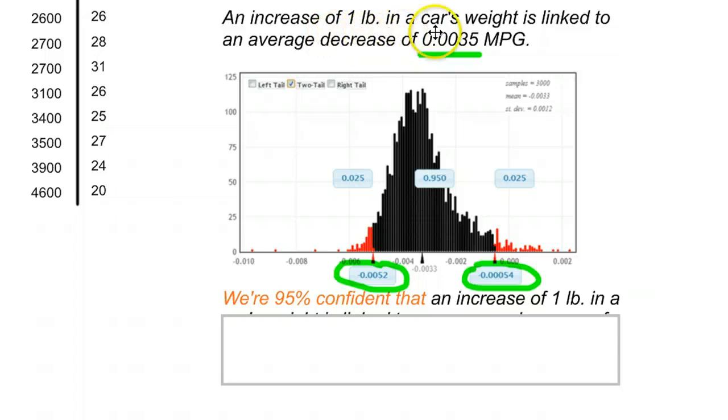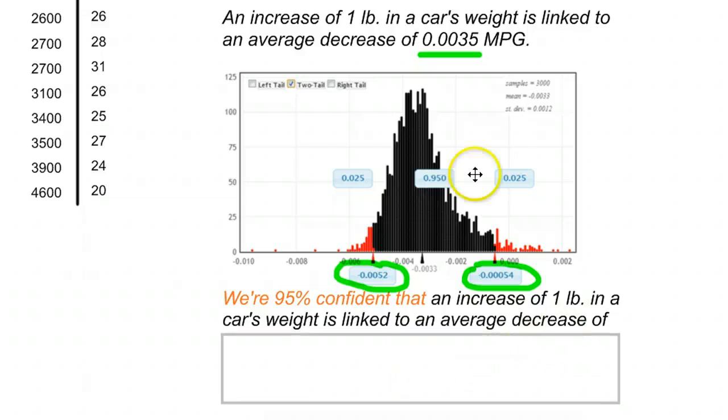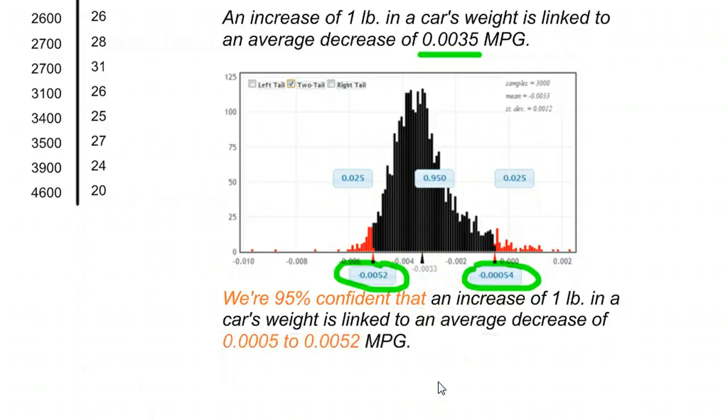an increase of one pound in a car's weight is linked to an average decrease of, and this is where instead of just saying a number, we're going to give that 95% interval that we just found, 0.0005 to 0.0052 miles per gallon.